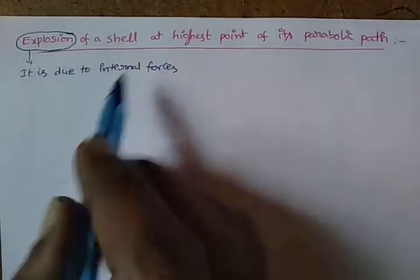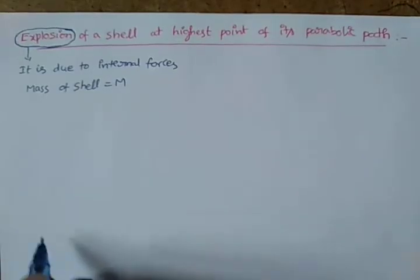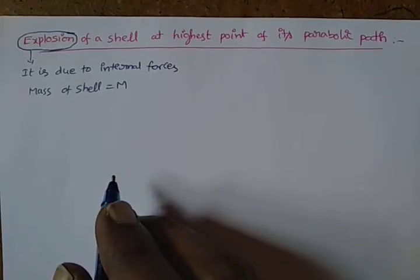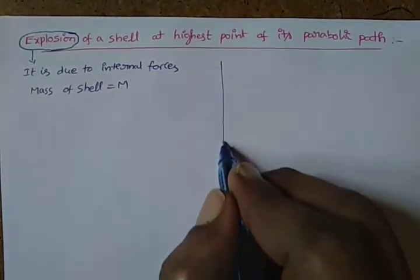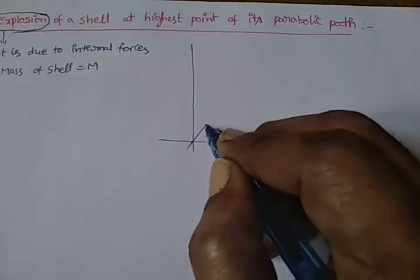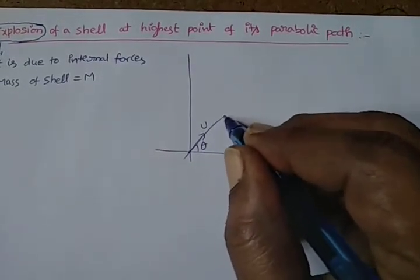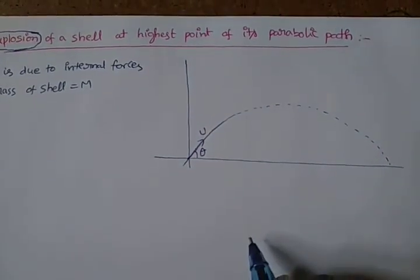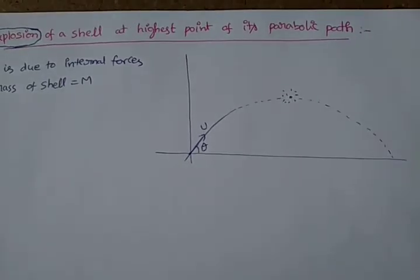Suppose we consider the mass of the shell is M. At the highest point, it breaks into different fragments of different masses M1, M2 and so on Mn. The shell is projected with velocity U by making an angle theta with the horizontal, so the shell is traveling in a parabolic path. But unfortunately, at the highest point, the shell breaks into different fragments.